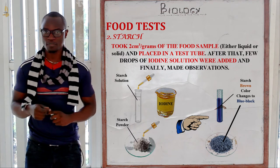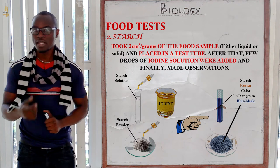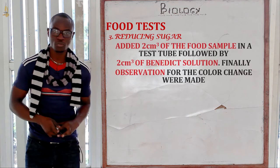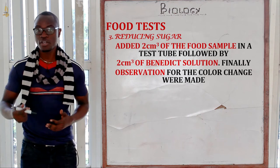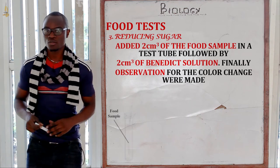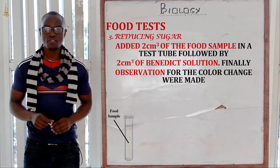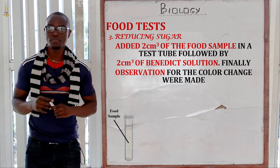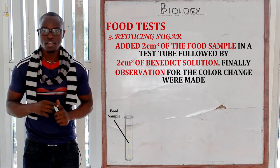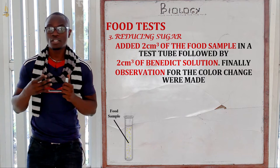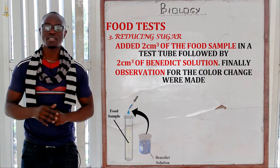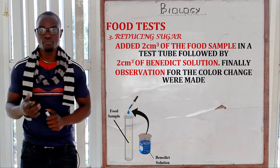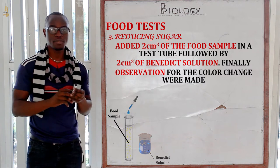If starch is present, the brown colour of the iodine solution will change from brown to blue-black, which will indicate that starch is present. Now let's look at the next one which is testing for reducing sugar. You take the food sample and place it inside the test tube.